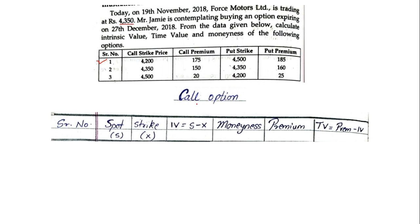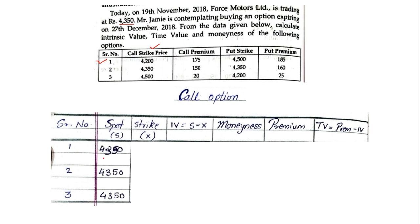In the question they give us the current trading price of 4350, that's our spot rate. Next column is strike rate — we are doing call first, so the call strike prices are given. IV stands for intrinsic value, which is spot minus strike. Then we have moneyness, premium, and total value. The spot price is 4350 in all three conditions, and the strike prices are 4200, 4350, and 4500.